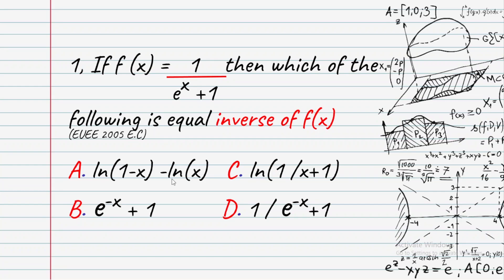The options include: 1 minus x, minus ln x, minus ln of x, e to the power of minus x plus 1, and ln in the bracket 1 over x plus 1.